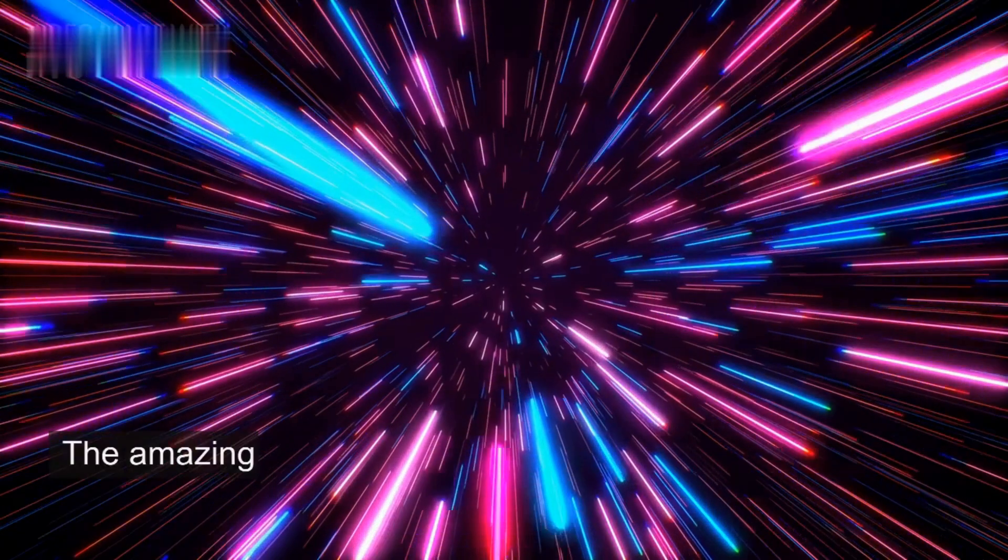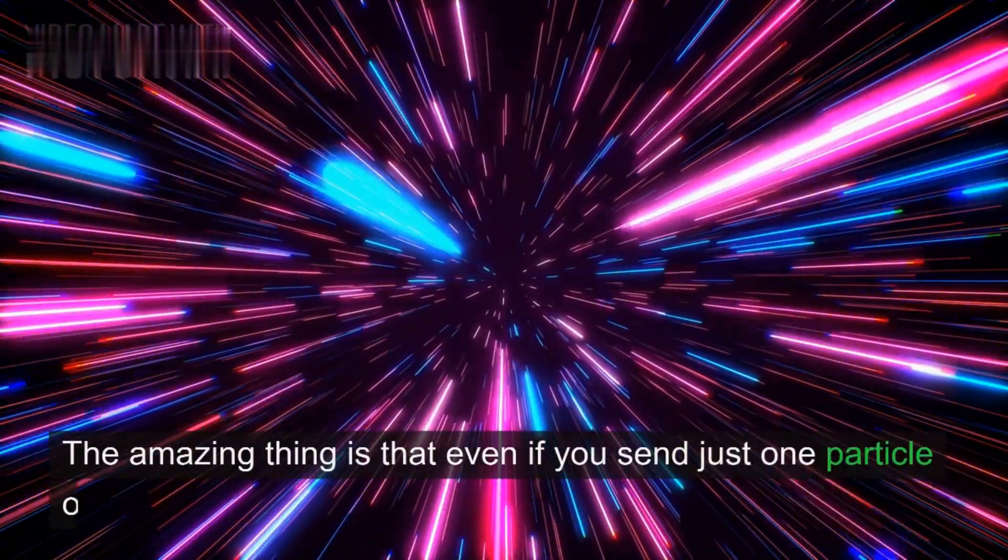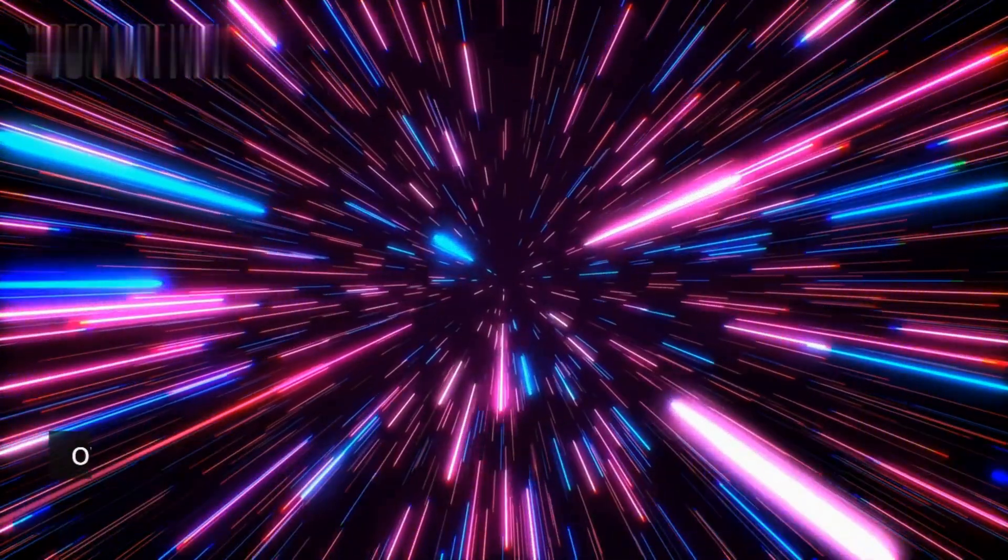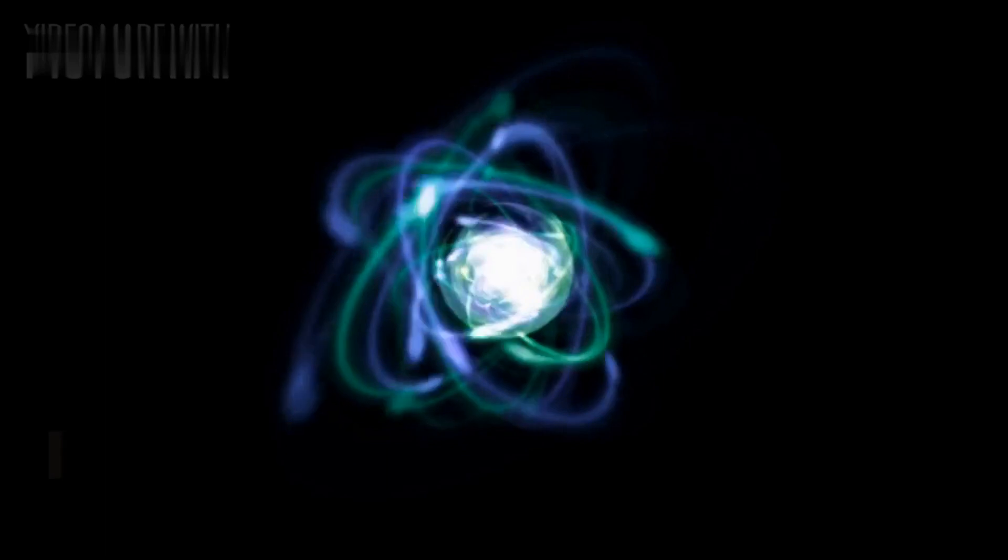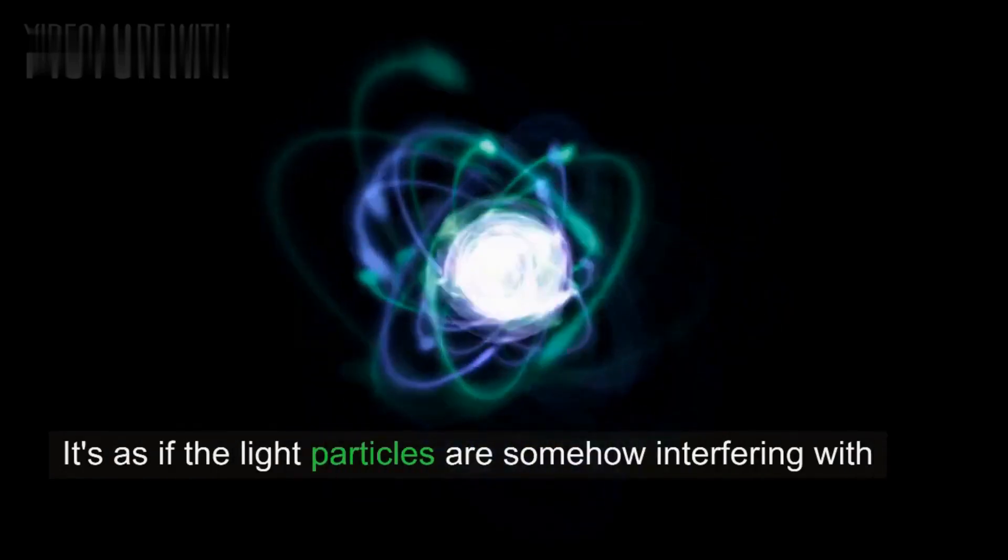The amazing thing is that even if you send just one particle of light at a time through the slits, over time, it still creates that same pattern of bright and dark stripes on the screen. It's as if the light particles are somehow interfering with themselves.